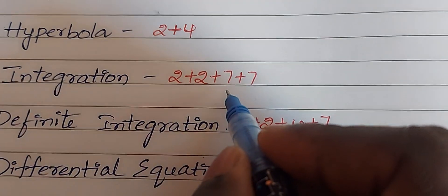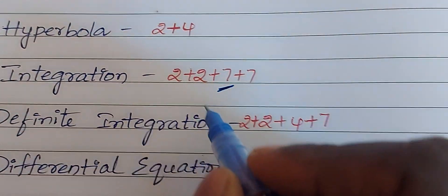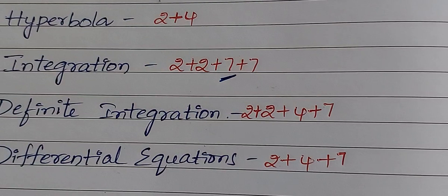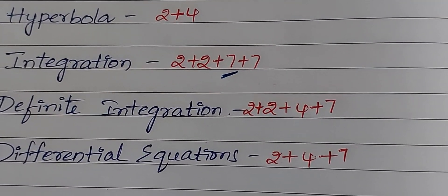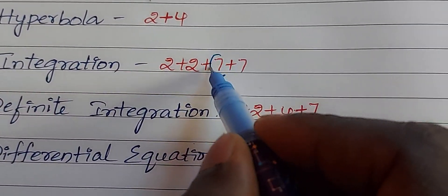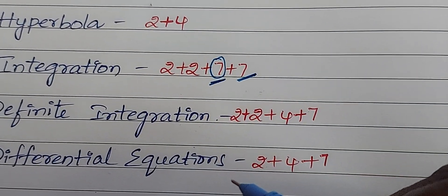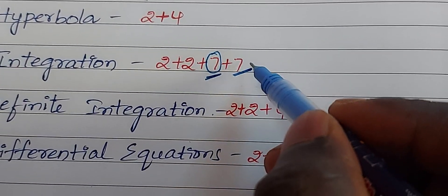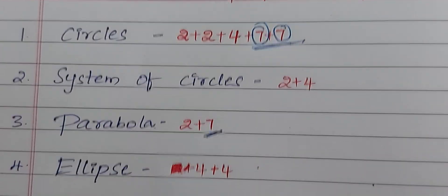Next, Integration — 2 questions and 7-mark questions. Integration of (a·cosx + b·sinx + c) / (d·cosx + e·sinx + f) — this model is a compulsory question. Next 7-mark question: Reduction formula. Integration of sin⁴x and integration of cos⁴x — this model is also compulsory. So these 5 questions are compulsory questions.